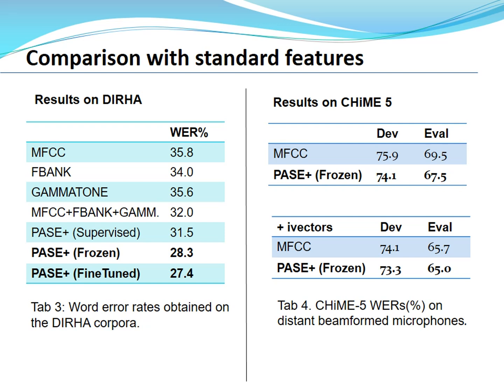On Chime 5, an extremely challenging task characterized by noise, reverberation, conversational speech, overlapping speech, and many other disturbances, we also achieve performance improvement over a standard MFCC baseline, even when concatenating i-vectors to these representations. This result is particularly important because it demonstrates good generalization, given that the challenging conditions in Chime 5 are very different from the training conditions — showing strong transferability of our features.